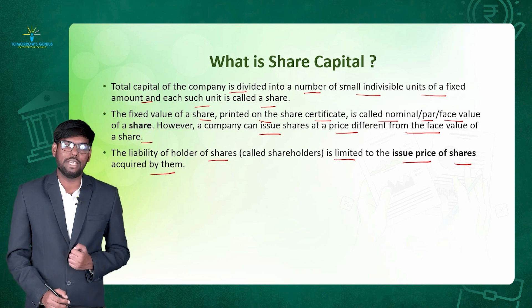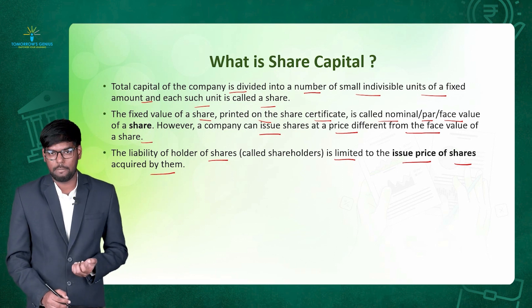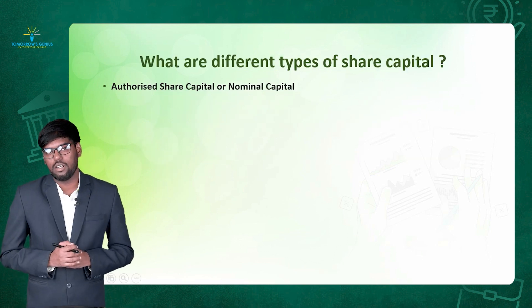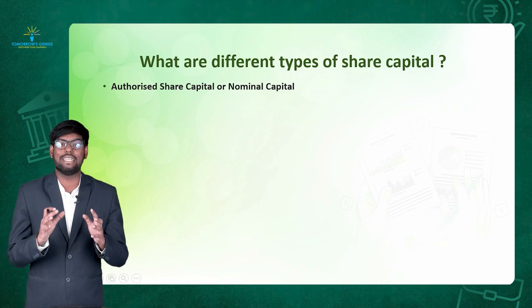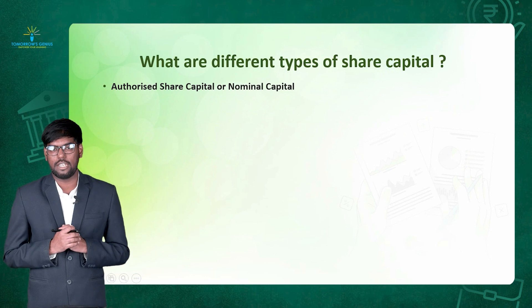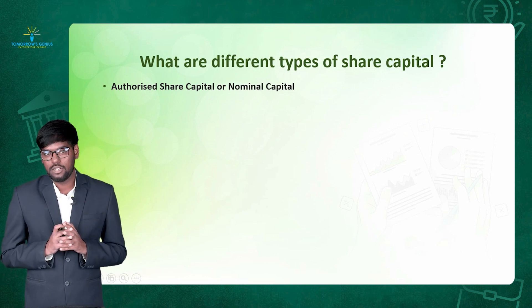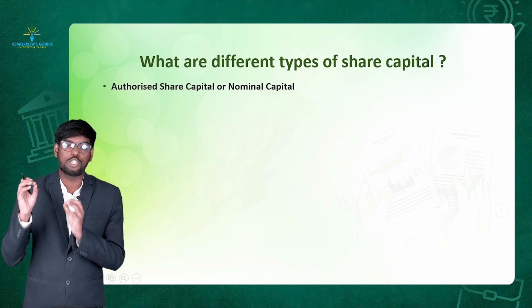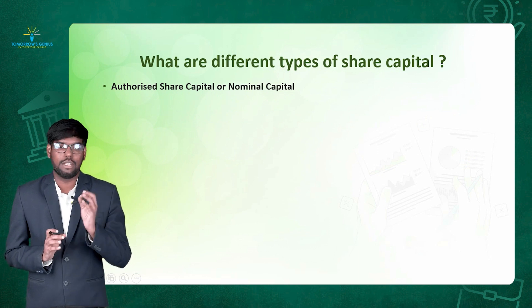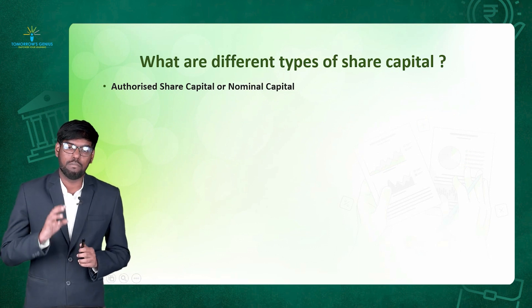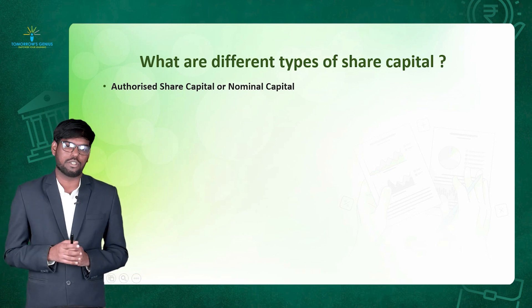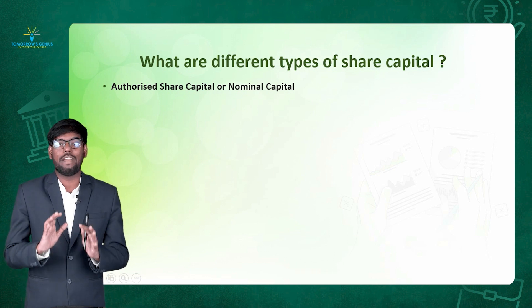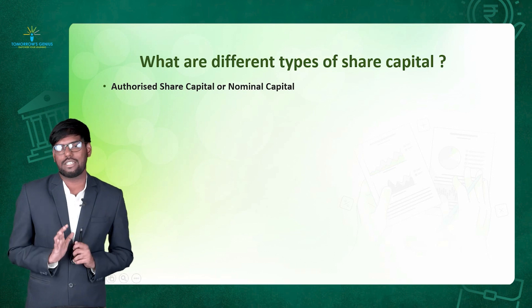Now, after discussing share capital, we have to discuss the types of share capital. Basically, there are different types of share capital. The first and most important type is authorized share capital. Authorized share capital indicates the maximum authority a company has to collect money from the general public. For example, if a company's authorized capital is 20 lakh rupees, it means the company can collect a maximum of 20 lakh rupees from the general public by way of issue of shares.